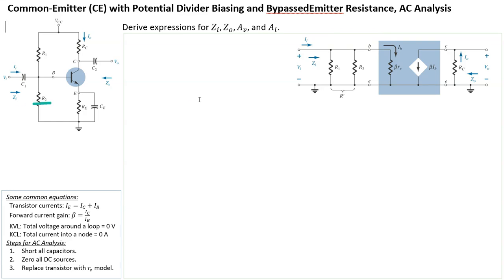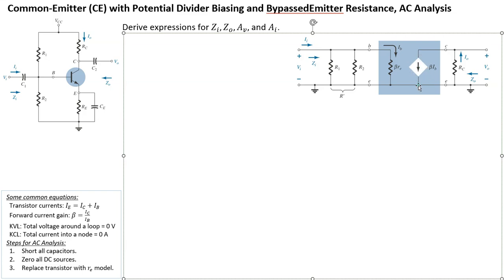On the input side we still have input impedance Zi and source Vi. Let's work out equations using KCL. Looking at io first: the beta*ib current flows downwards and has nowhere else to go but back through RC in the same direction as io. So io is simply beta*ib — a very simple KCL result.